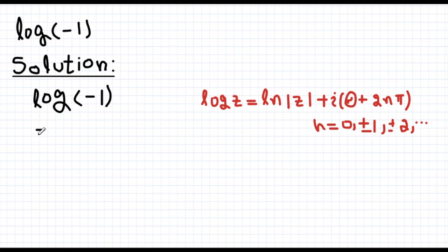So just substitute minus 1 in place of z. We get natural log of minus 1 mod plus iota and the principal argument of minus 1 is pi. So we have pi here and plus 2n pi as it is.